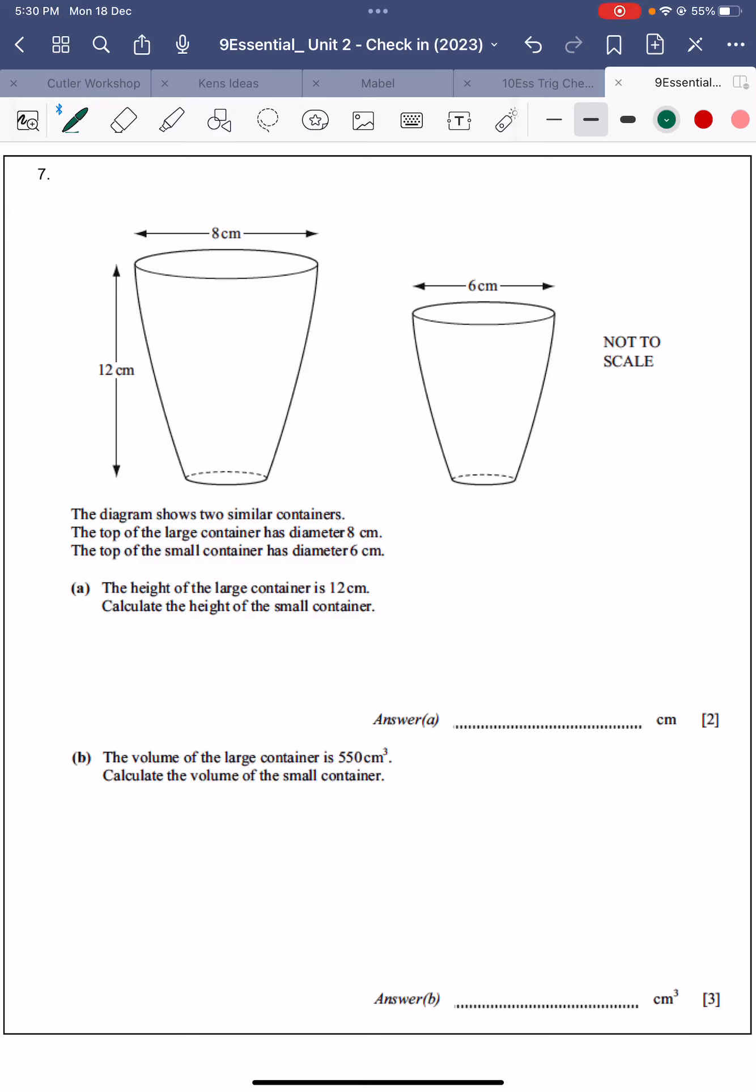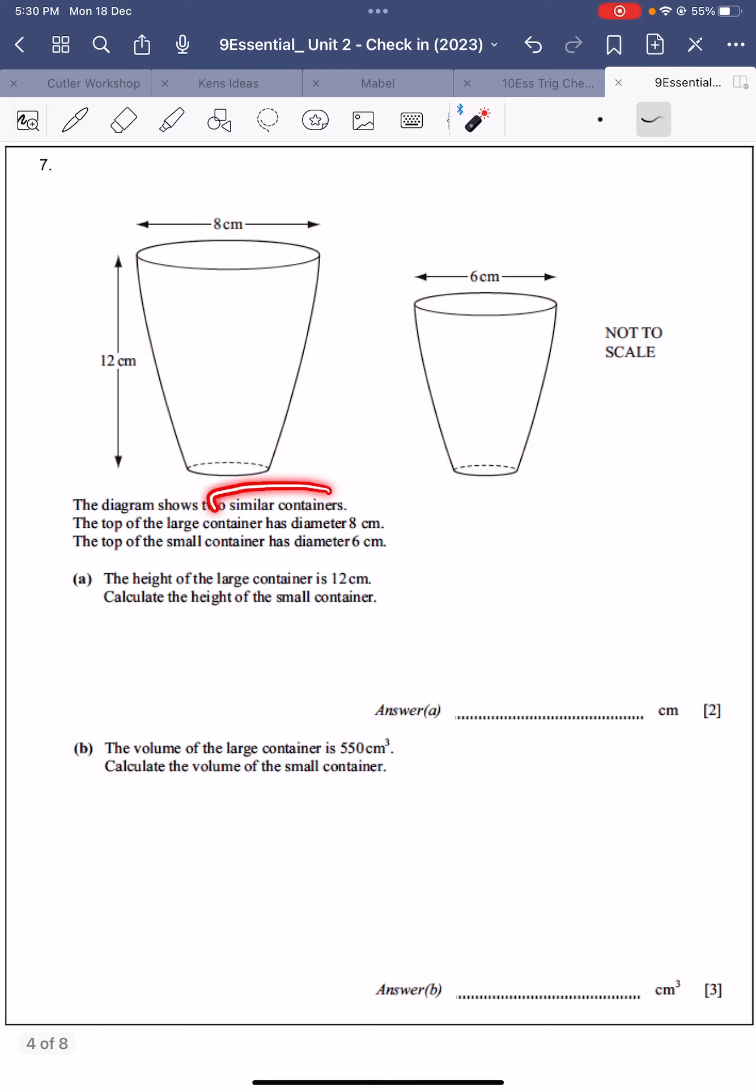All right, so it looks like we're going to have a similar solids question here. The diagram shows two similar containers, so it tells you they're mathematically similar. So there's a scale ratio for length, maybe one is twice as big or one and a half times as big or 2.5 times as big.